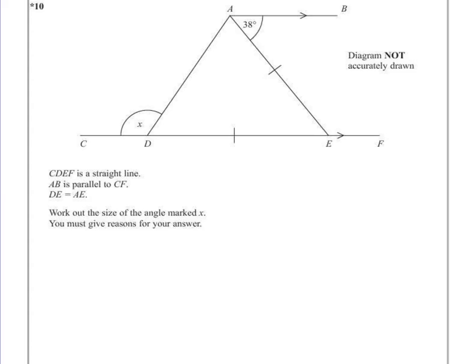We've got a diagram. CDEF is a straight line, AB is parallel to CF, DE is equal to AE. Work out the size of the angle marked X, you must give reasons for your answer.